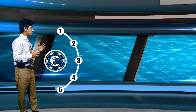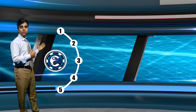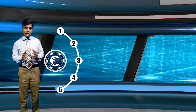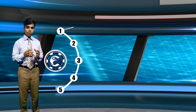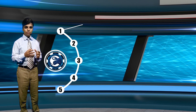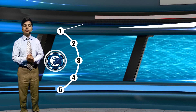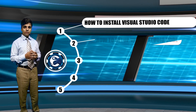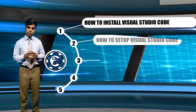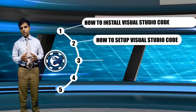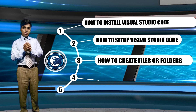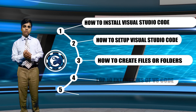You can see that this diagram has 5 points, and these points are the lectures. The first one is how to download Visual Studio Code. The second one is how to set up Visual Studio Code. The third lecture is how to create a file or folder in Visual Studio Code. The fourth one will be the top ten extensions of Visual Studio Code.